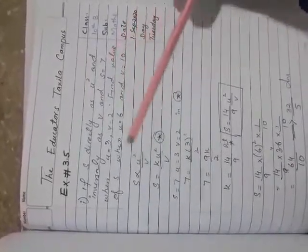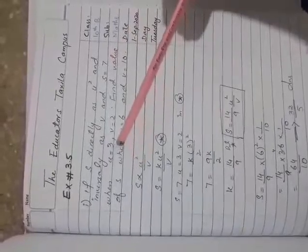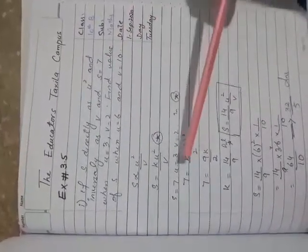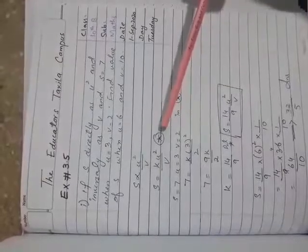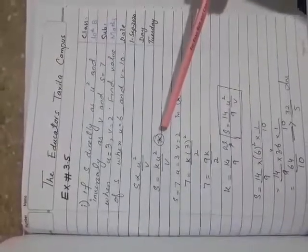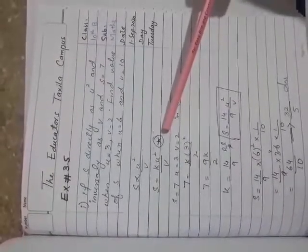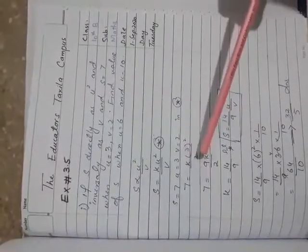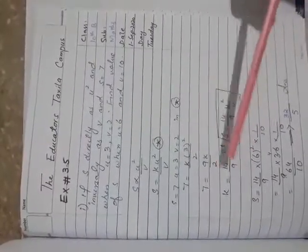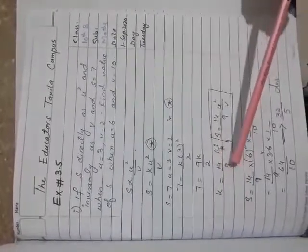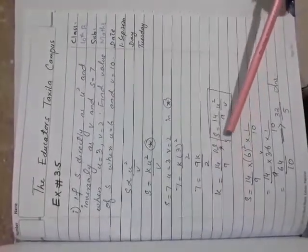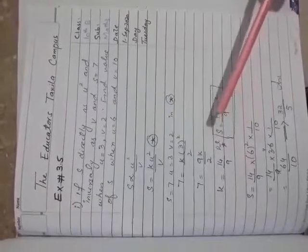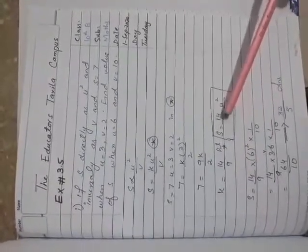S is equivalent to 7 when u is equivalent to 3 and v is equivalent to 2. Put these values in to find out the value of k. S is equivalent to 7, u is equivalent to 3, and v is 2. Simplify them. K is equivalent to 14 by 9.